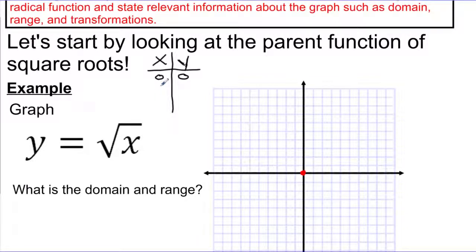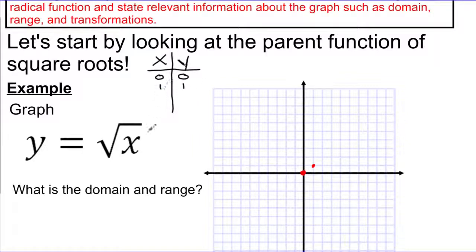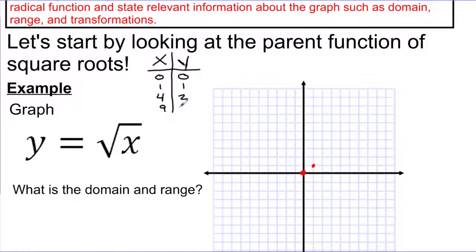Let's try the next one. I could plug in 1: the square root of 1 is 1. Now, what is the square root of 2? It's about 1.3 or 1.4 — not a nice number, so I'll skip it. Square root of 3 is about 1.7 or 1.8 — also not nice. But once I get to 4, the square root of 4 is nicely 2. Then I'll skip ahead to 9, because the square root of 9 is 3.